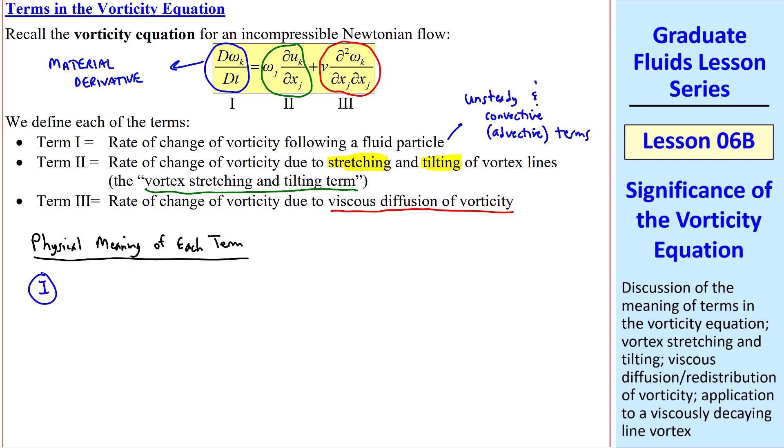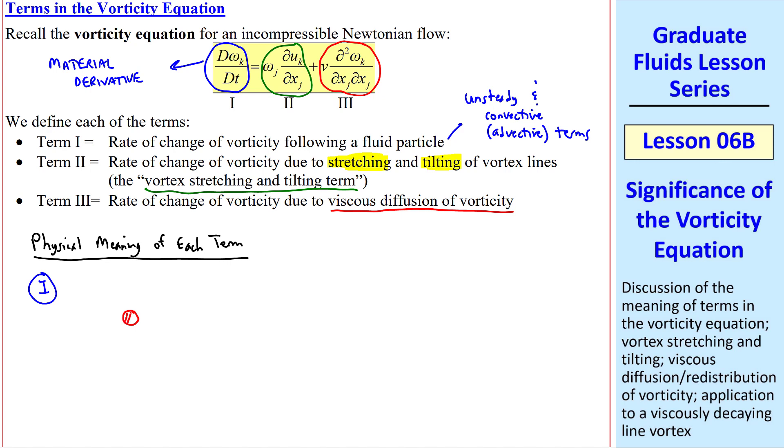We are already familiar with term 1. If we have a fluid particle that has some vorticity and it moves in the flow to a new location, the vorticity may change, again, due to direct unsteadiness or to advection, which simply means moving from one place to another where the flow field is different. That's our definition of the material derivative.